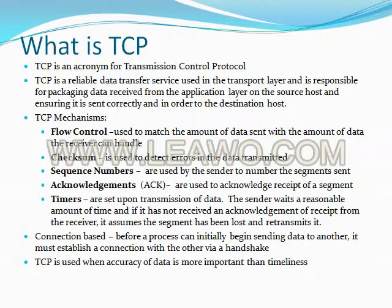To give you a general idea, here's a brief description of the mechanisms TCP uses to deliver reliable data transfer service. Flow control, as its name suggests, is used to match the amount of data sent with the amount of data the receiver can handle. The receiving host communicates this to the sender as a variable called their advertised window, which can fluctuate with network conditions. A checksum is used to detect errors in the data transmitted.